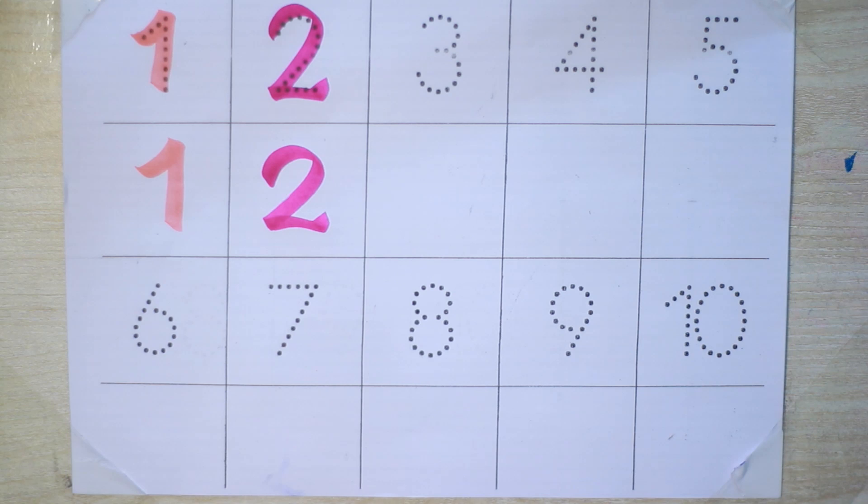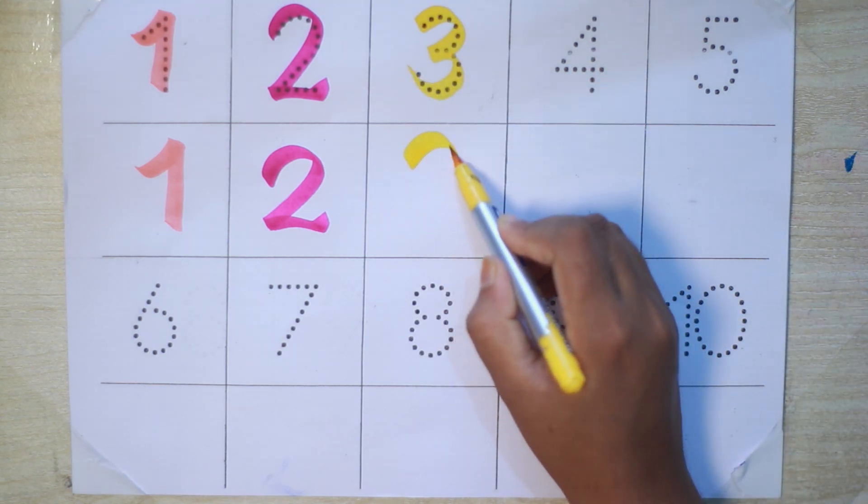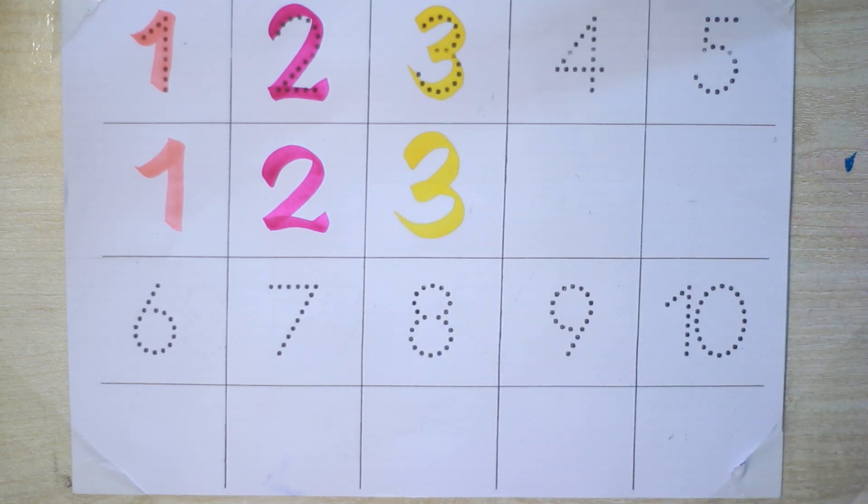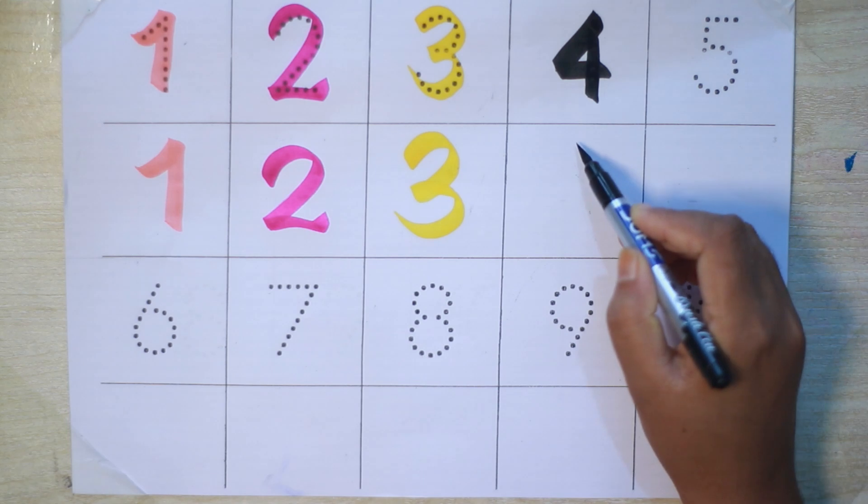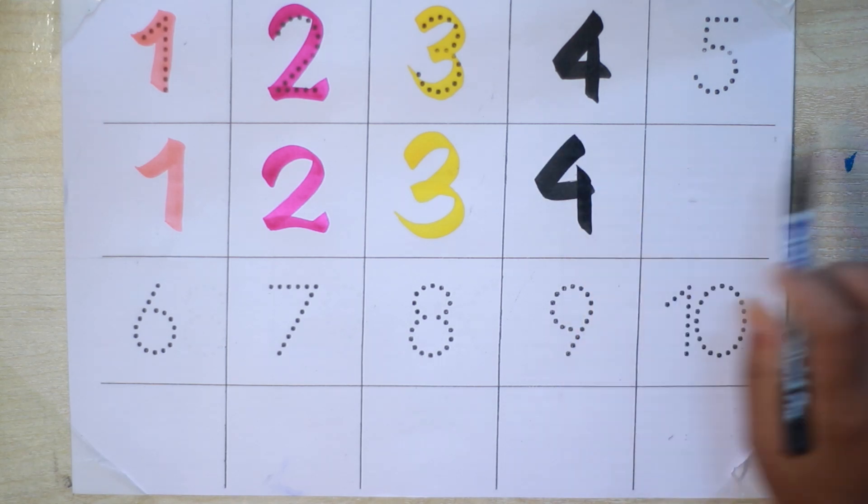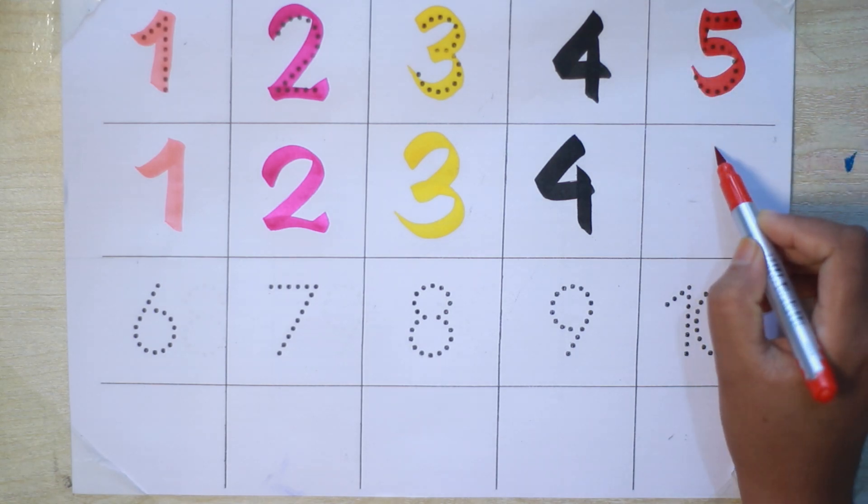Yellow color three, three, three. Black color four, four, four. Red color five, five, five.